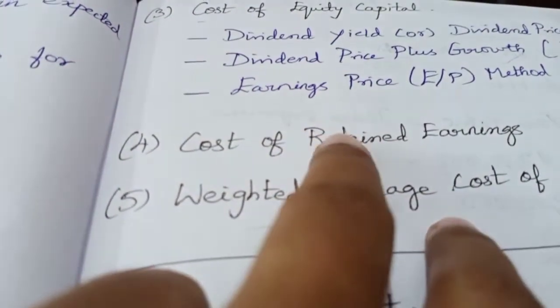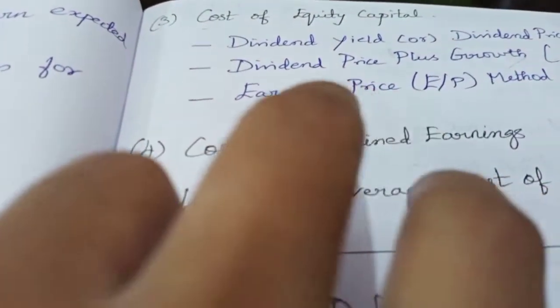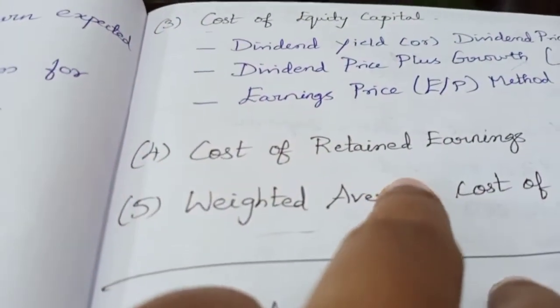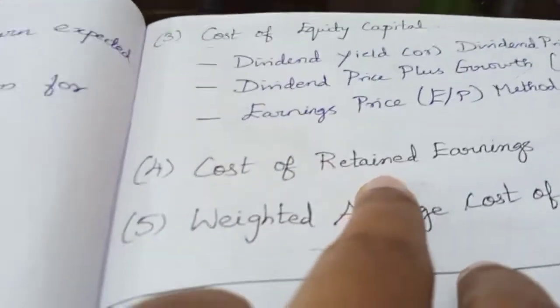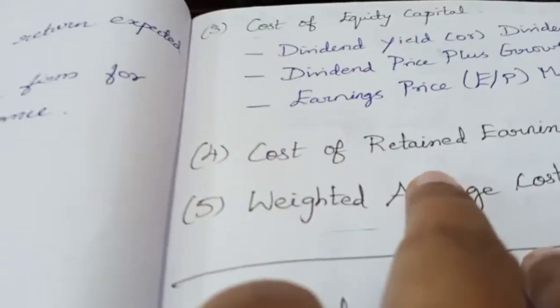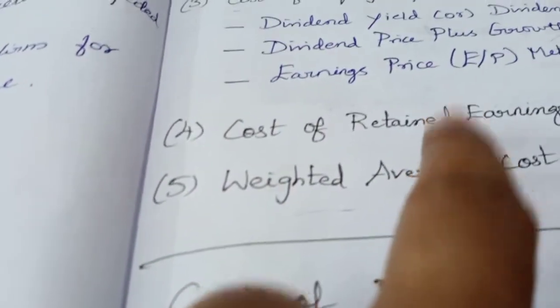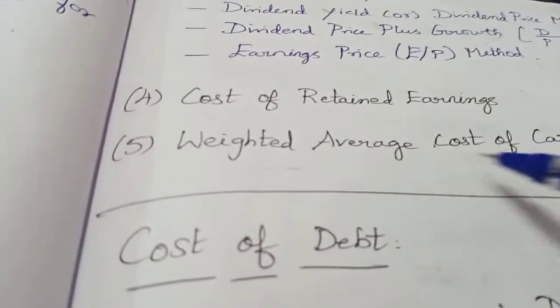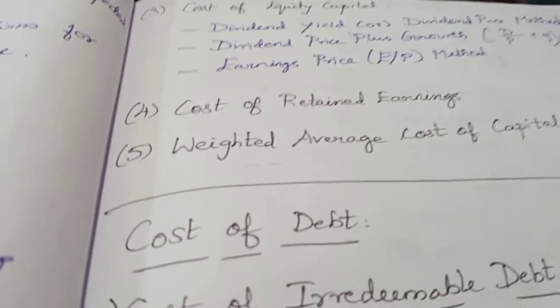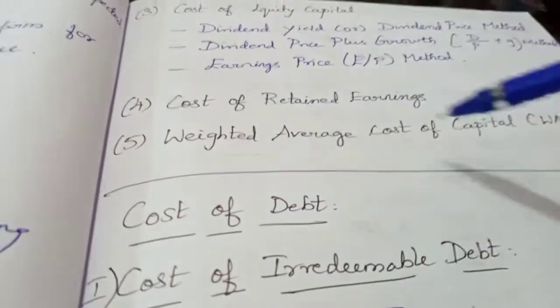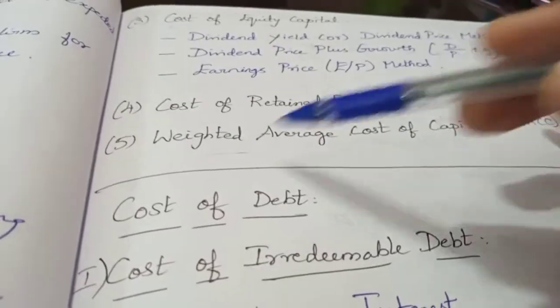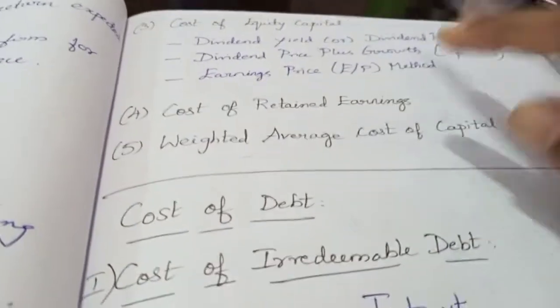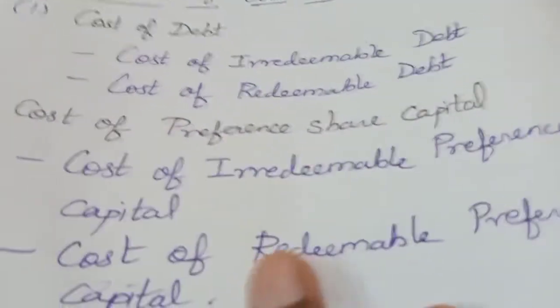In the future, we will expand, modernize, and replace assets. Part of the profit is retained for business expansion. The portion of profit retained is called retained earnings, used for business growth and modernization.